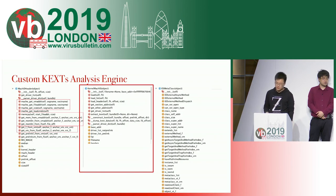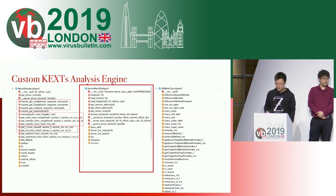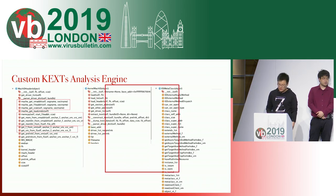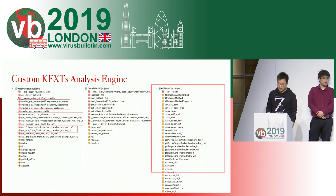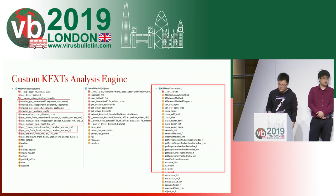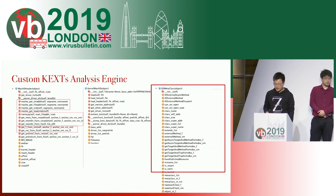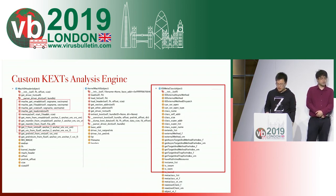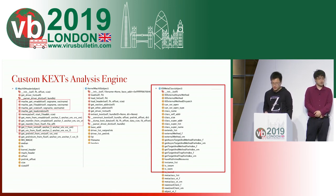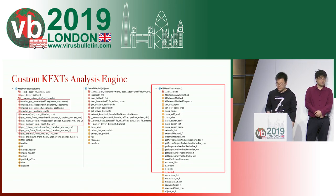This class is responsible for mapping the macho image into a class and parsing all the section frame information in order to provide basic information. Lastly, we define the OSMetaClass data structure used to save all the detailed information, which includes each user client and its external methods. Here we can find the details including class name, the address of many key functions, and whether it can be connected from user space, and its connection type if so.